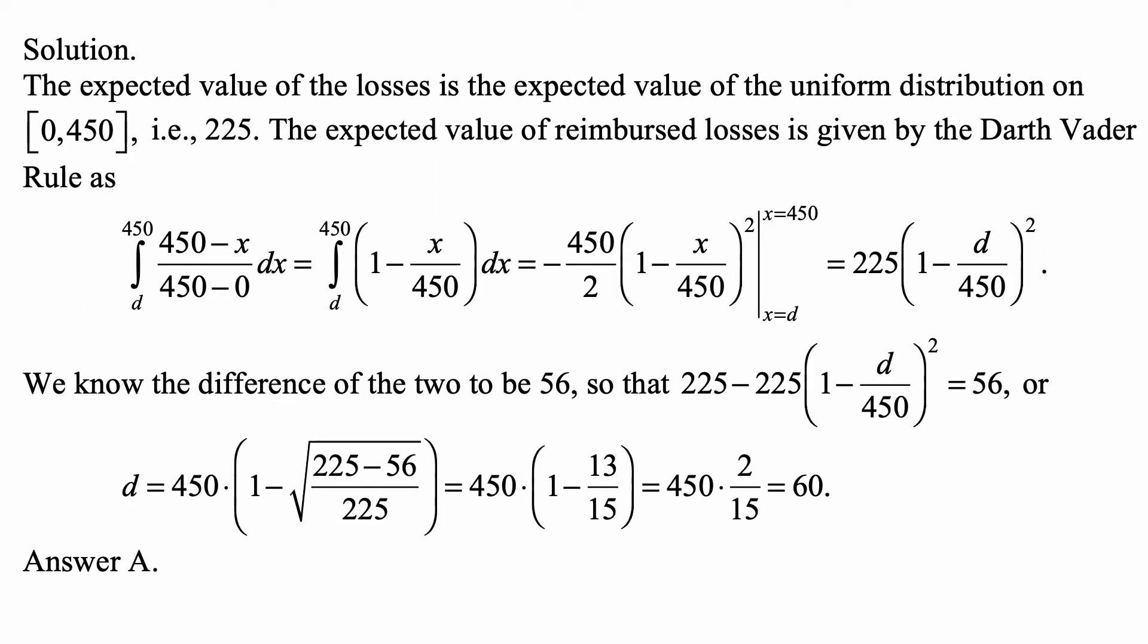Here's a solution. Because we know that losses have this uniform distribution on 0 to 450, the expected value of the losses is the expected value of that uniform distribution, which is the midpoint of the interval, so 225. The expected value of reimbursed losses is given by the Darth Vader rule.